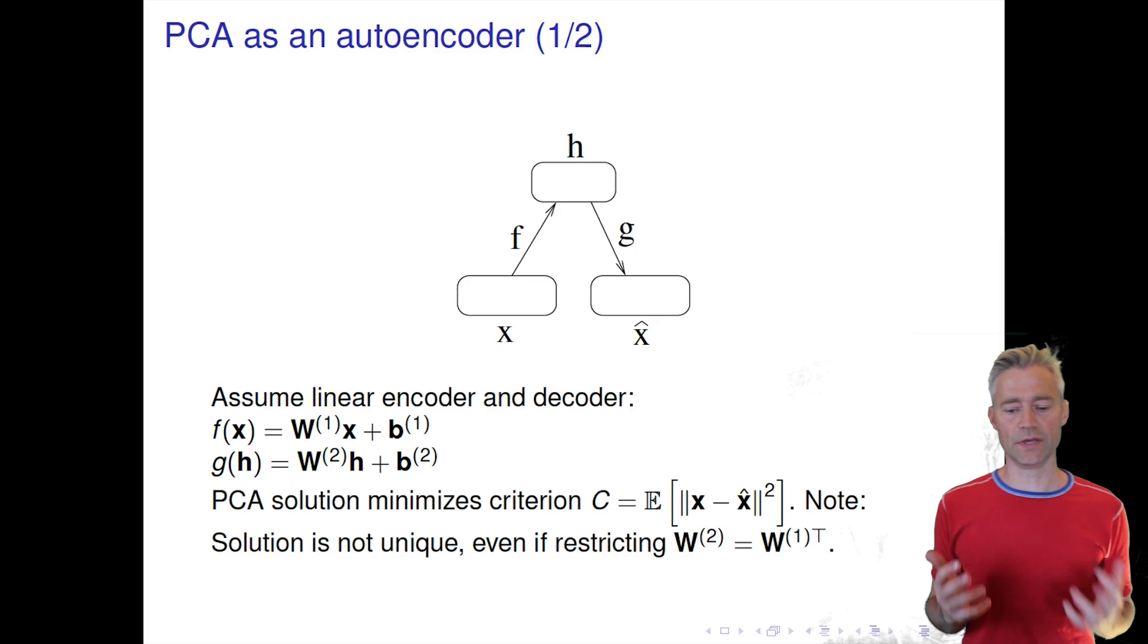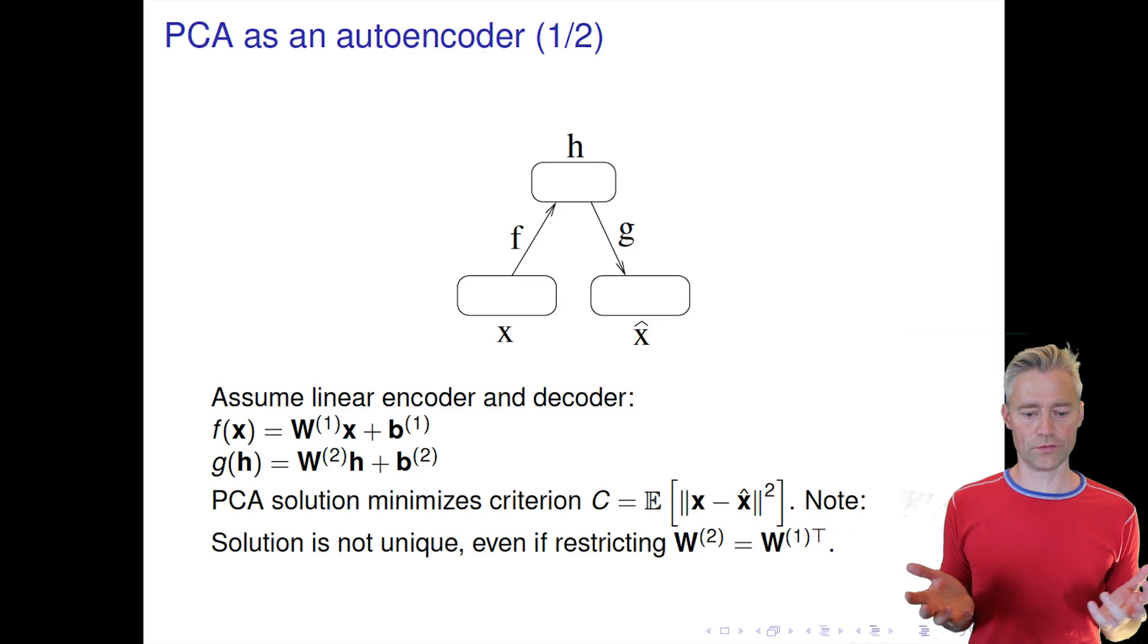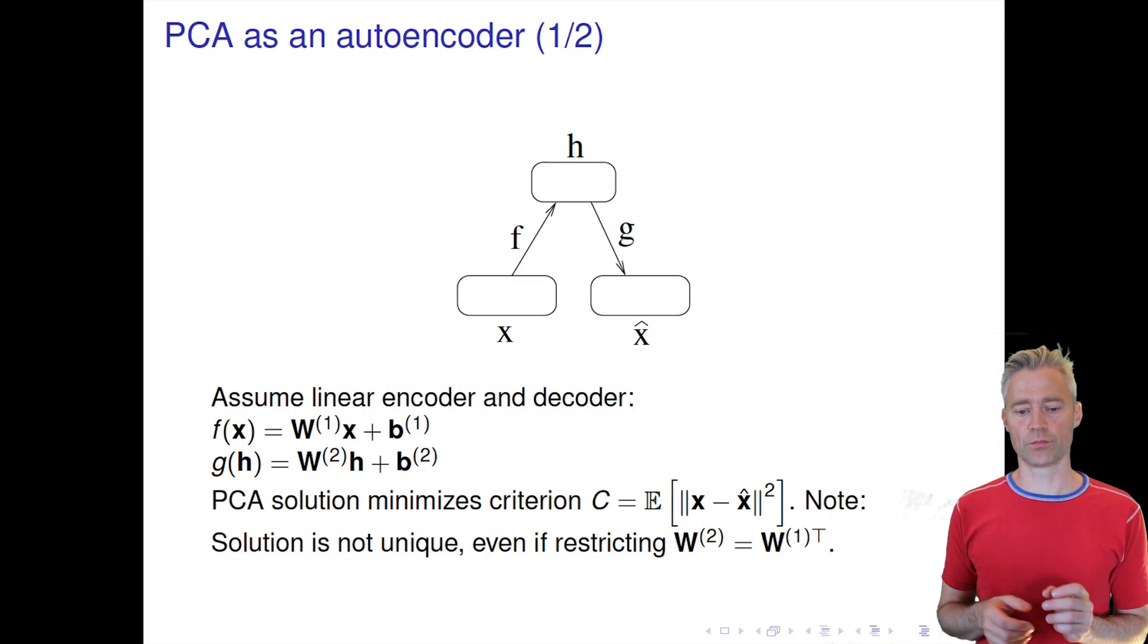PCA is simply choosing some dimension of the latent space, for example two, and then minimizing the difference between the original data and the reconstruction. The solution is not unique, even if we restrict the W's to be each other's transpose, because what we'll achieve with this minimization is that the W's will span the two first principal directions, but it will not be exactly the two.